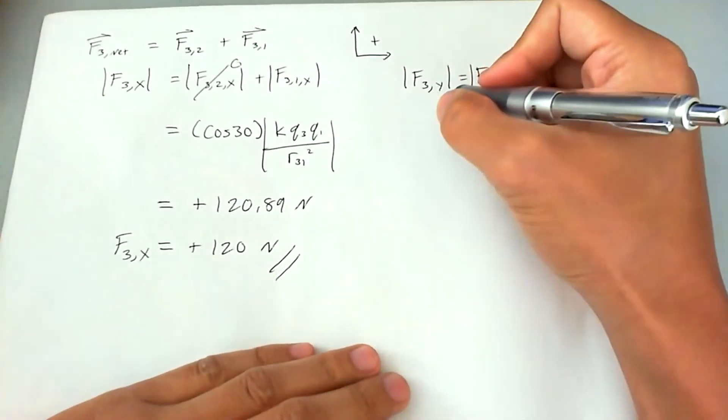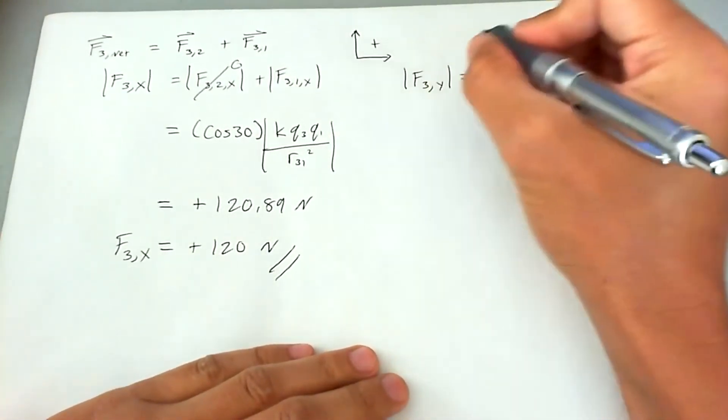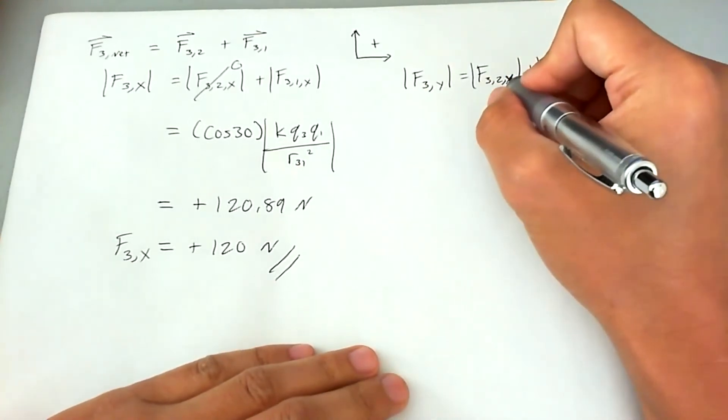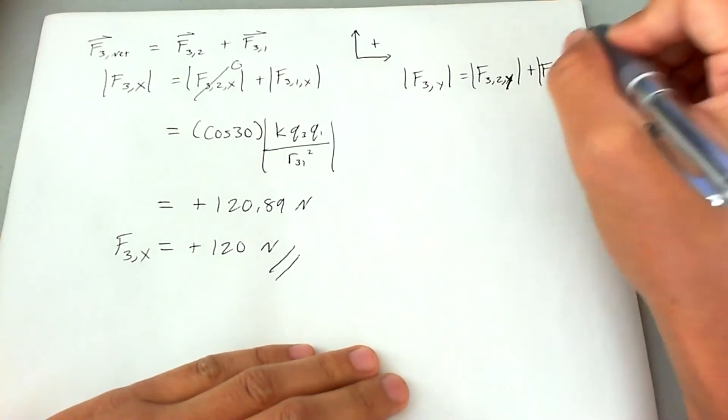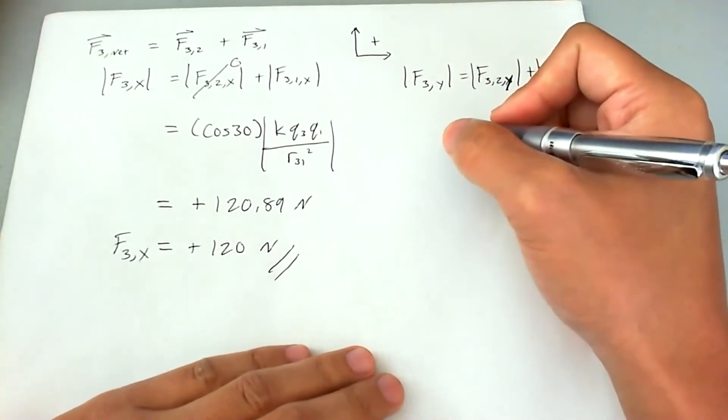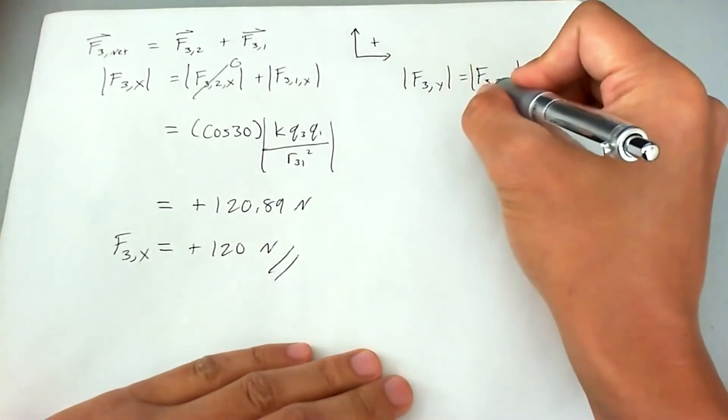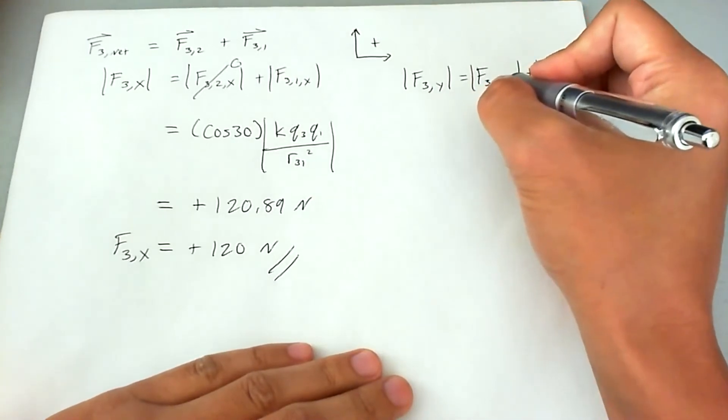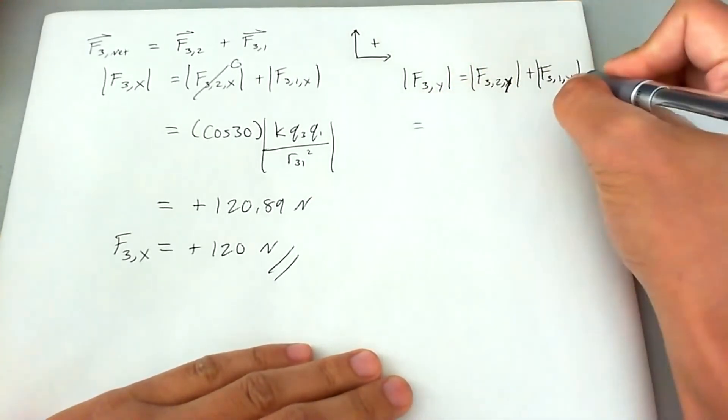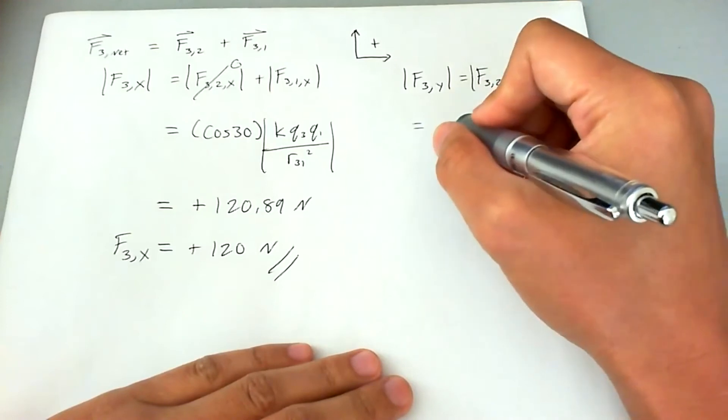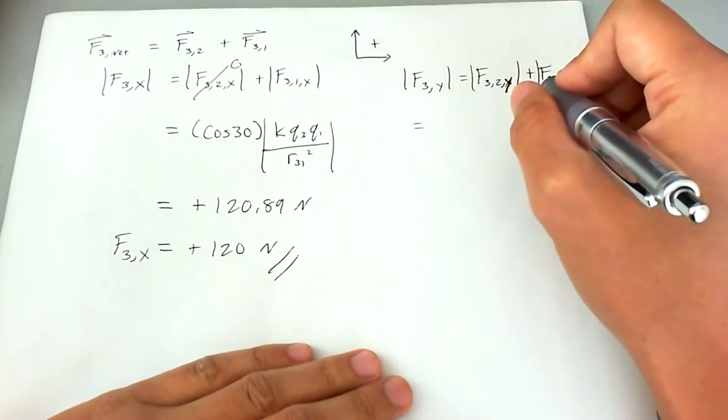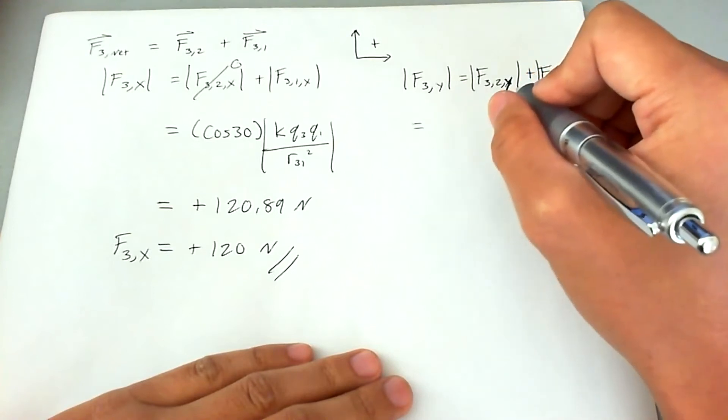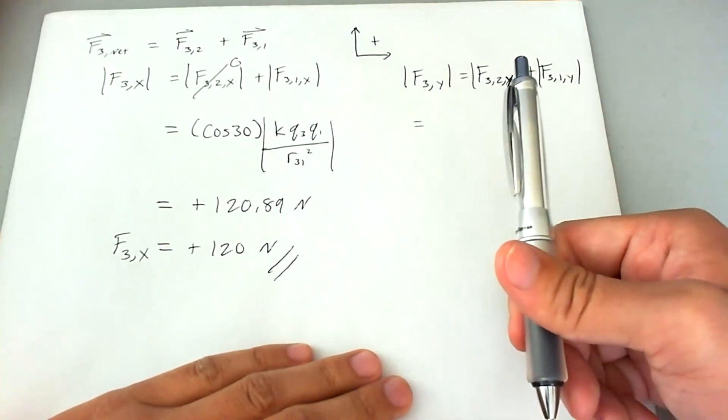Now the force acting on charge three in the y direction is two terms because we know that both q2 and q1 are both forcing charge three up or down. So we're going to go ahead and do what the second charge is doing first, and then we're going to go with the first charge. Since the second charge is directly beneath charge three, there is no trigonometric component. It just tries to force it upward.